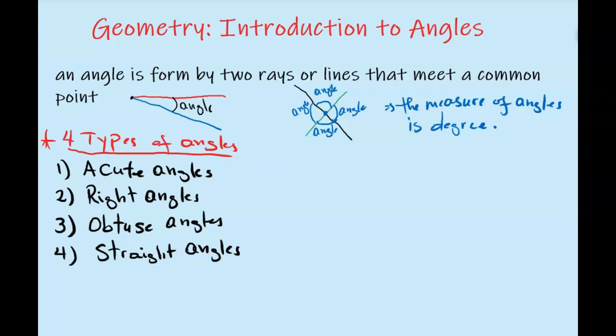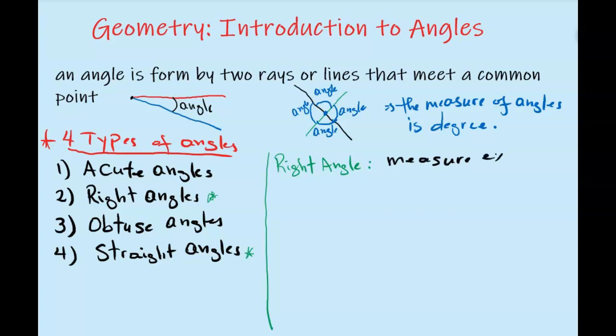Let's talk about right angle and straight angle first. A right angle is an angle that measures exactly 90 degrees. So a right angle measures exactly 90 degrees.